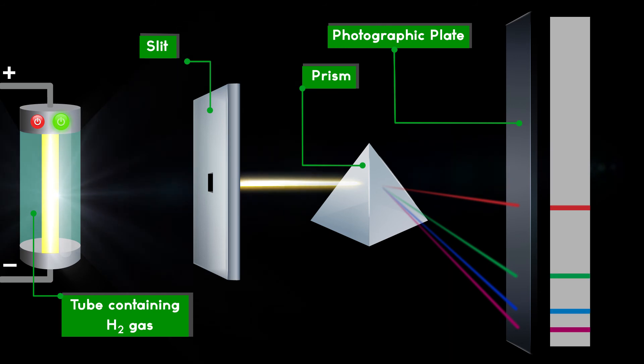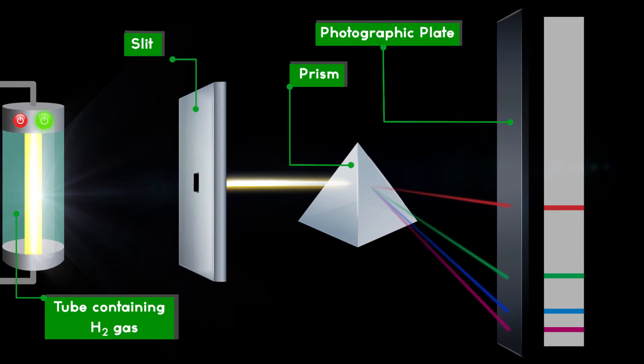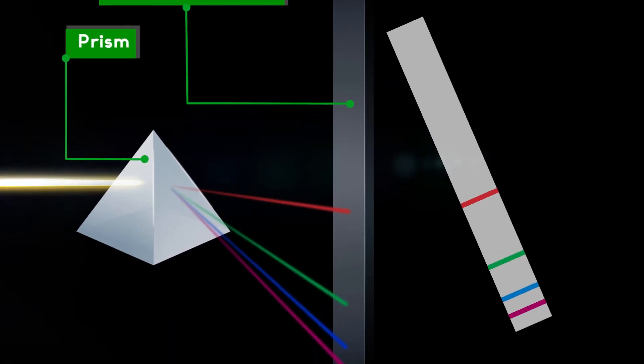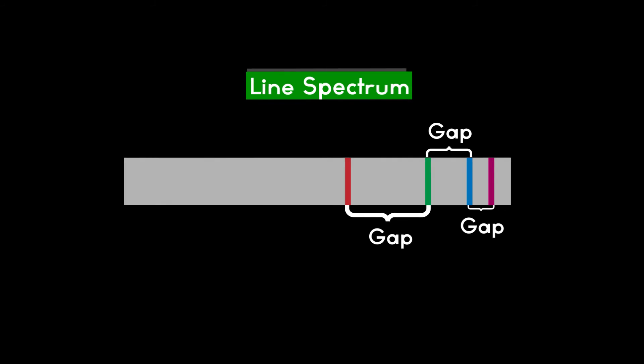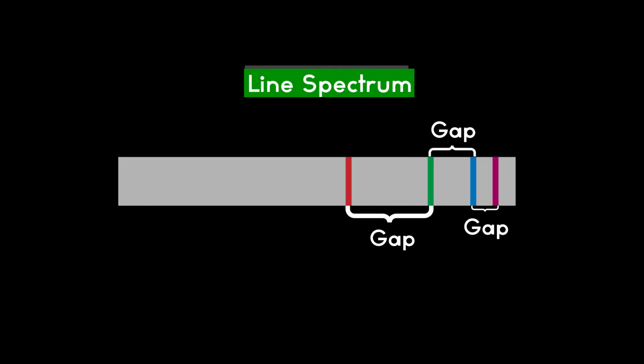In a continuous spectrum, a band of colors is observed without any gap. However, in a line spectrum, we observe gaps between the colors.